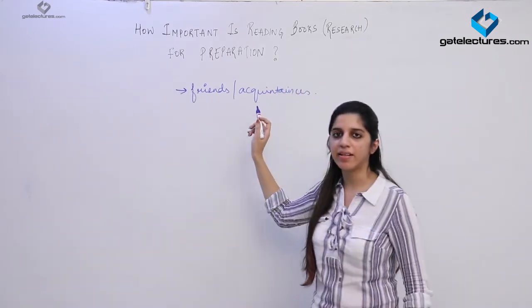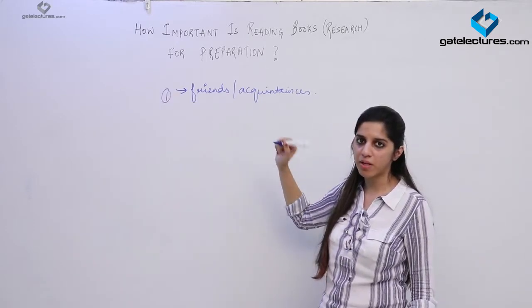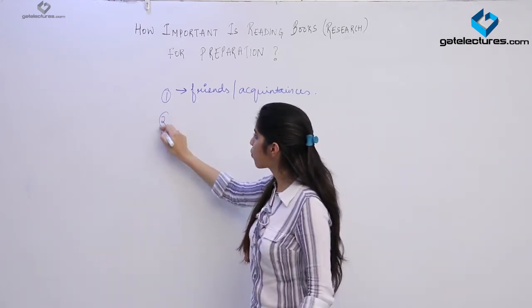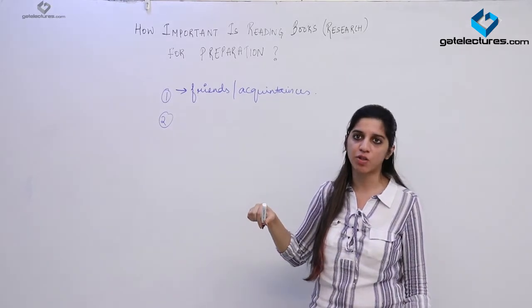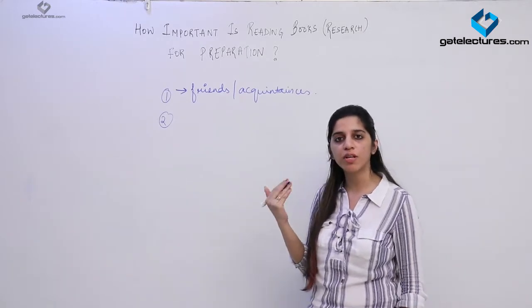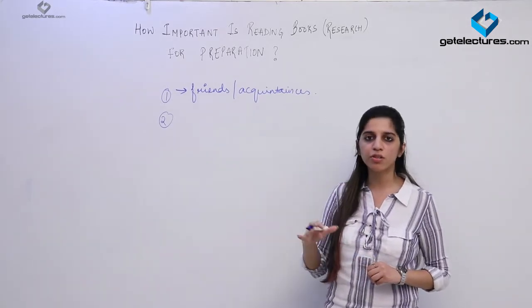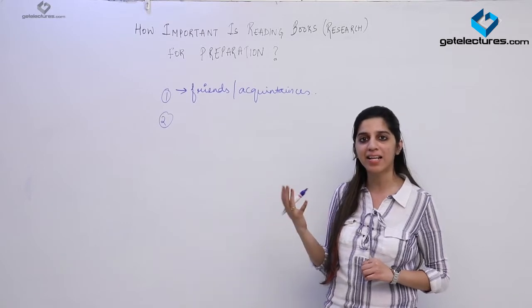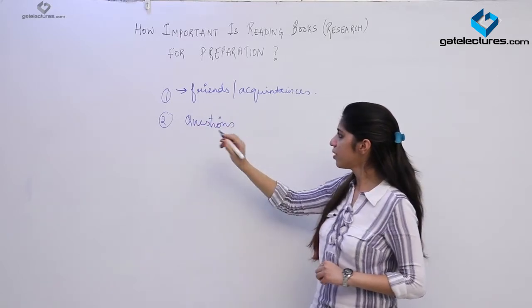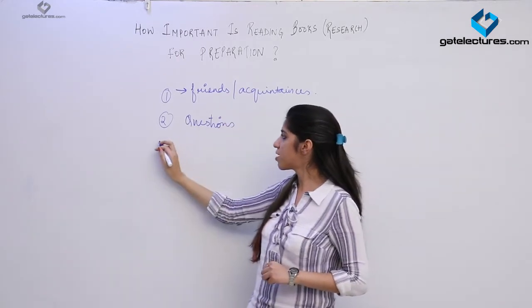Try to resolve it then and there itself, first priority. Suppose you could not get a solution from here also, you're still confused for this topic. Second approach can be: try to solve questions from that topic. This may sound ambiguous and vague, but questions also give you clarity about a topic. Only theory is not important. Once you have gone through the theory and lecture, questions add clarity to that topic. Try to solve some questions related to that topic, try to see solutions of the questions - maybe you will get clarity.